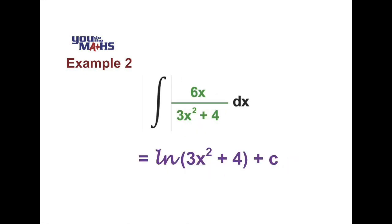So going back to the start of example 2, we can see that inside the integral we have 3x squared plus 4 all to the power 1, and its derivative is 6x. So this matches the rule we saw earlier, which results in a natural logarithm, in this case of 3x squared plus 4 plus a constant.